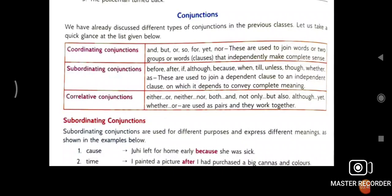Subordinate, one is subordinate clause. What is subordinate conjunctions? They are used, they are actually depend, this one dependent clause. And they are actually depend on independent clause. Like before, after, although, because, when, till, unless, though, etc. Correlative conjunctions, like either or, neither nor, both and, not only but also. They are used as pairs.